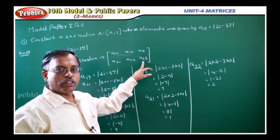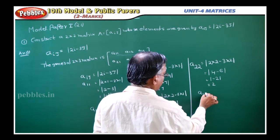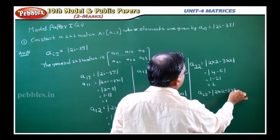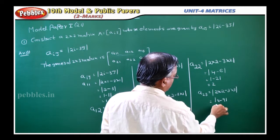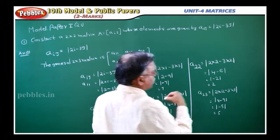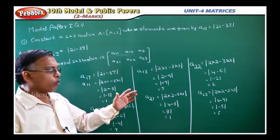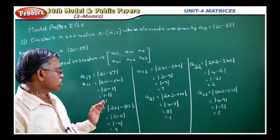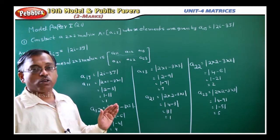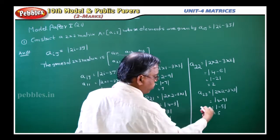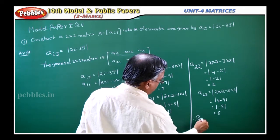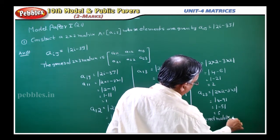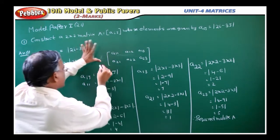One more element to find: A₂₃. A₂₃ is modulus of 2 into 2 minus 3 into 3, which is 4 minus 9, nothing but modulus of minus 5, nothing but 5. Inside the modulus, even if you get a negative value, you always take the positive, because modulus is defined only for positive values. Therefore, the required matrix A is complete.